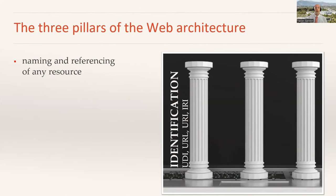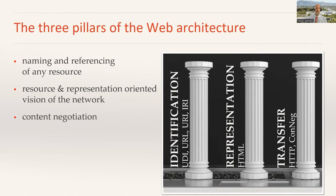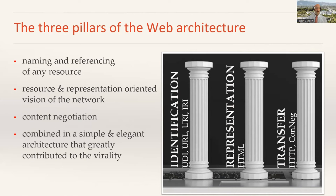We can identify three pillars of the web architecture: the ability to name and reference any resource using URIs; the ability to identify resources but have representations describing them, with a representation and resource-oriented vision of the network; and the ability to negotiate the content obtained whenever we try to access one of these resources. The web combined all three pillars in a single, simple, and elegant architecture, and that greatly contributed to the virality of the web.